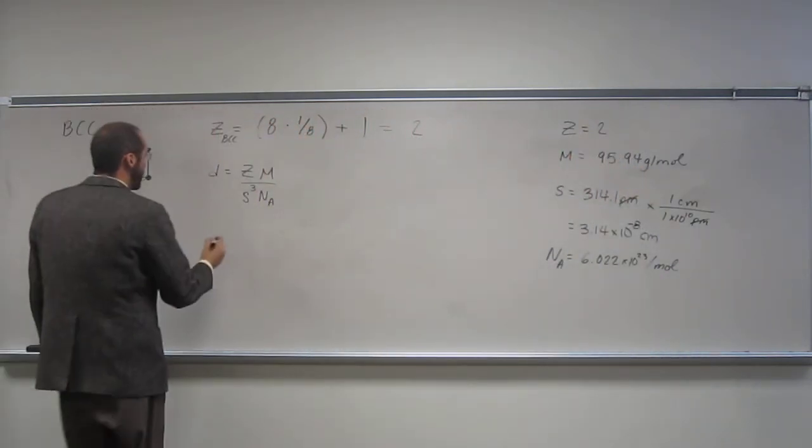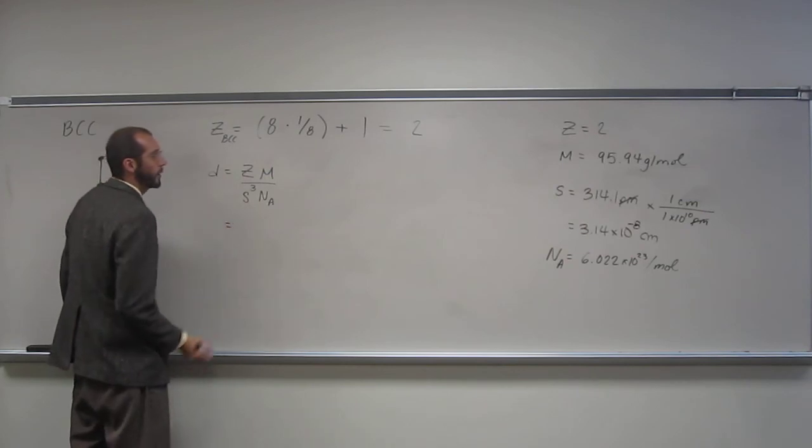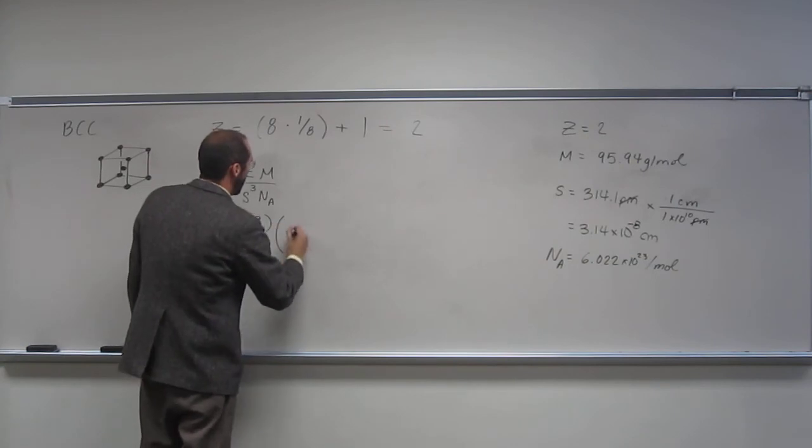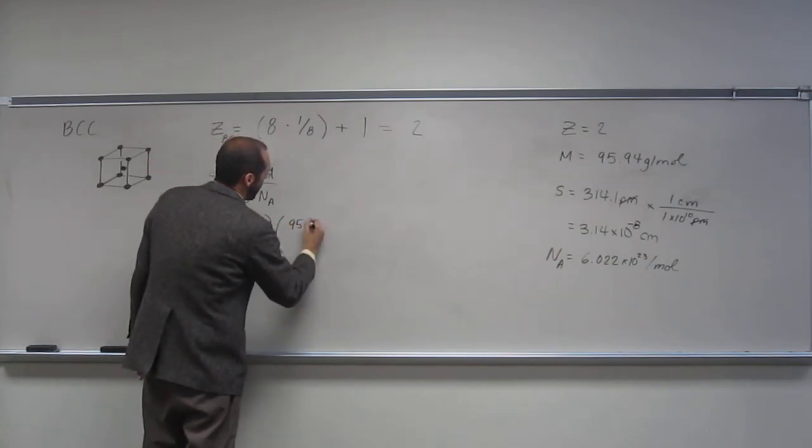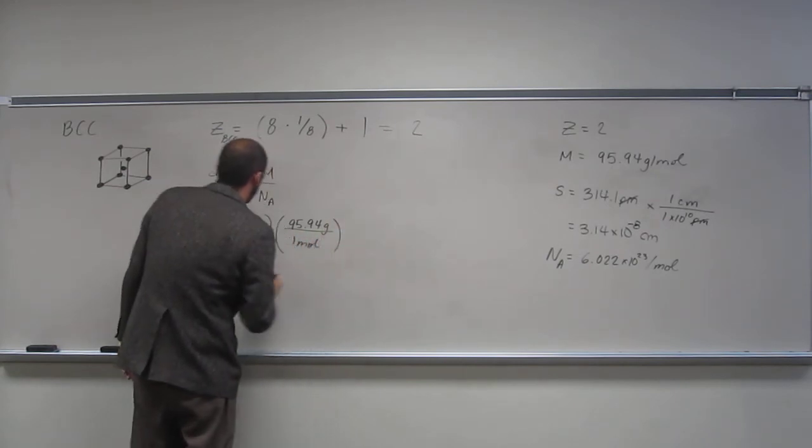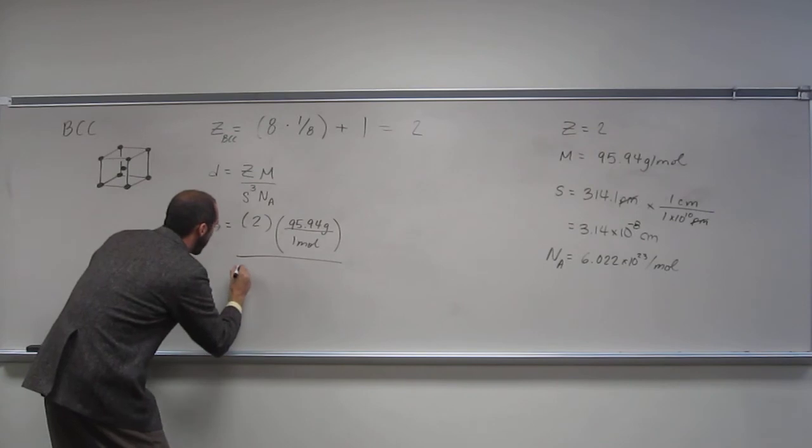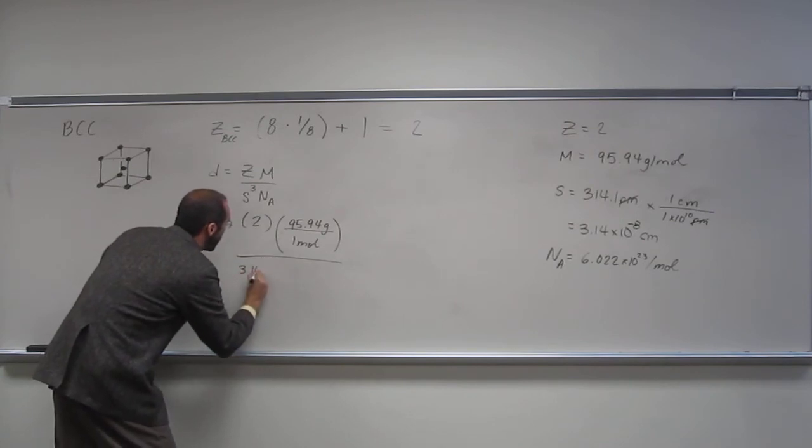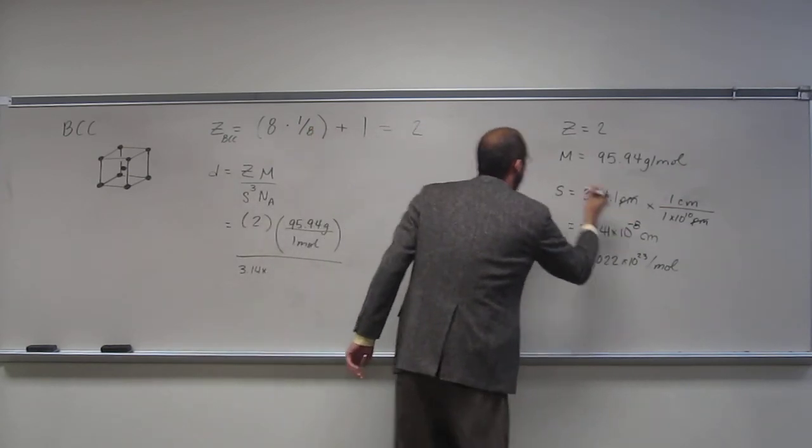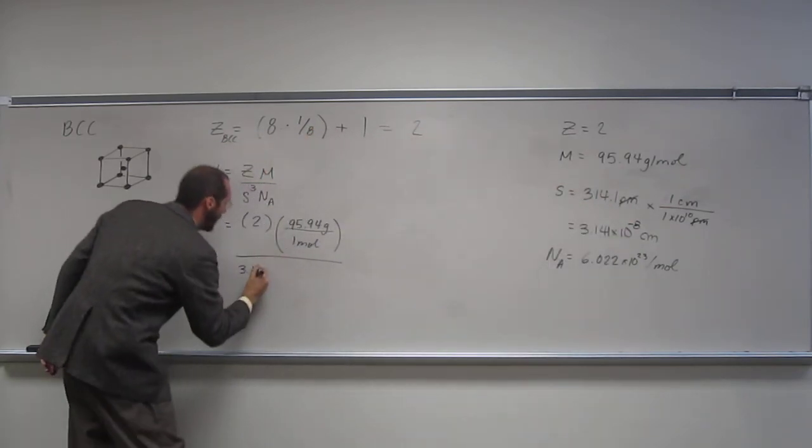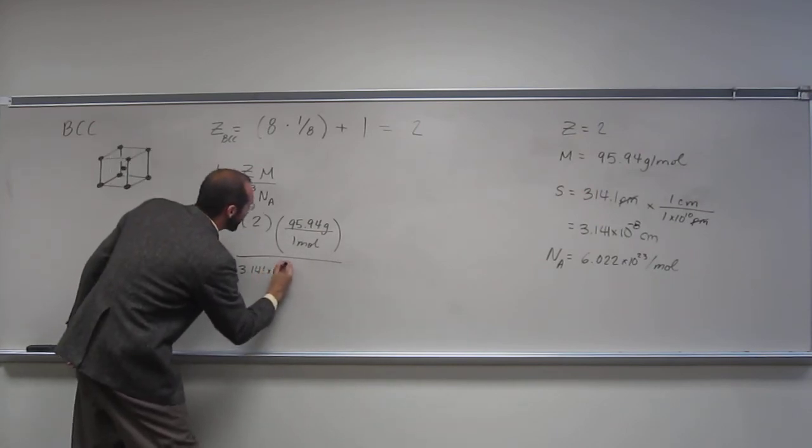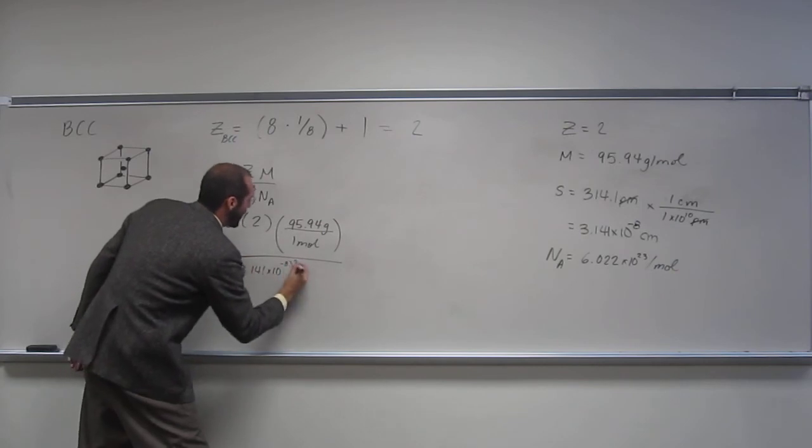So now, we'll chug, right, so Z is 2, molar mass, 95.94 grams per one mole divided by 3.141, it's got to be something in every video, you know.